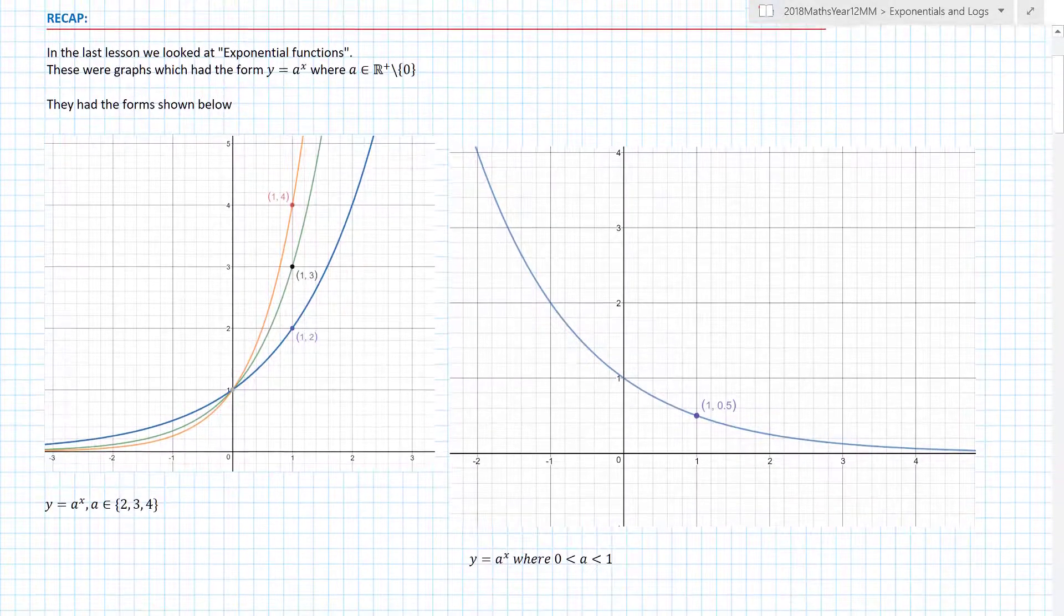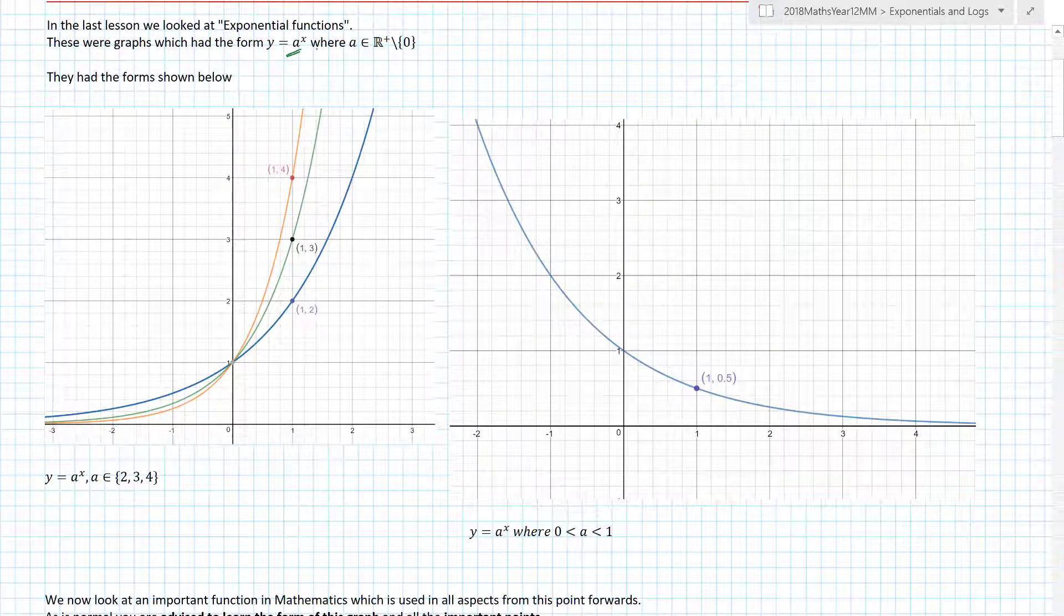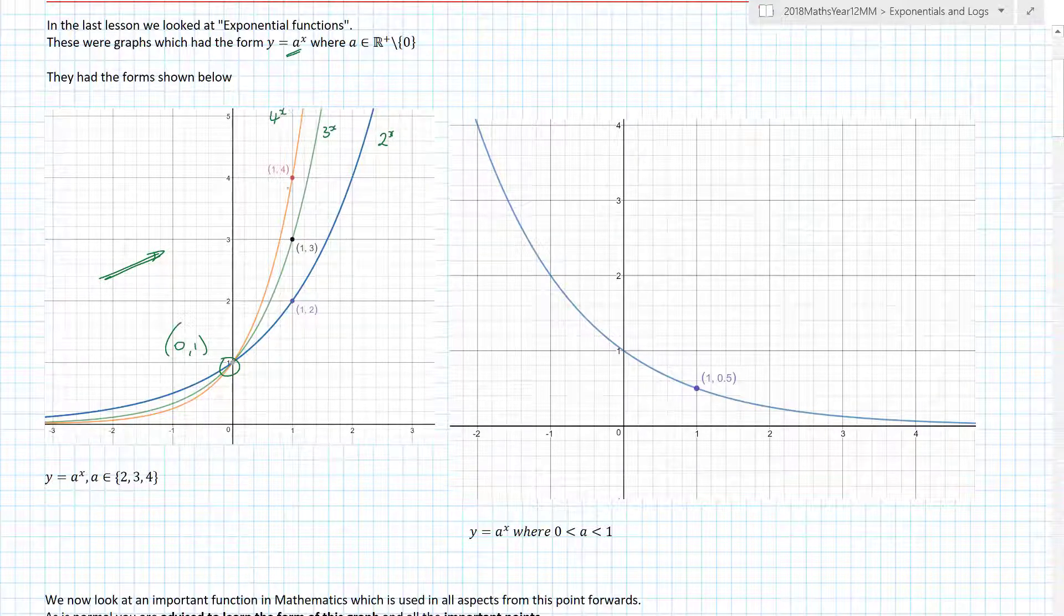Recap: in the last lesson we looked at exponential functions and these were graphs which had the form y equals a to the x. Here are screenshots from that lesson. If you remember, exponential functions generally speaking always have the same form. They go through (0,1) and if I had the graph of 2^x, 3^x, and 4^x we can use that information to help us find each of these points.